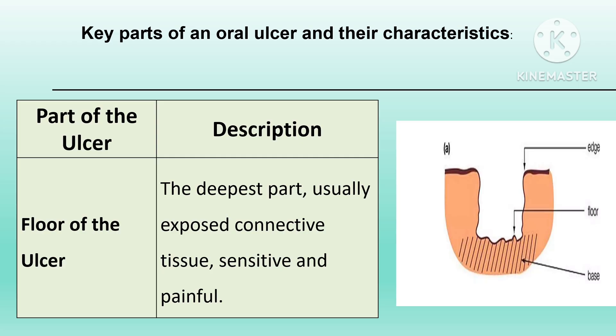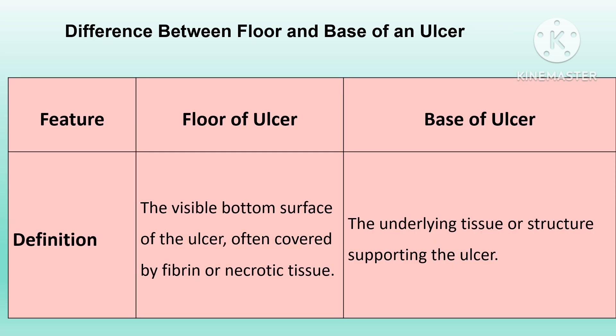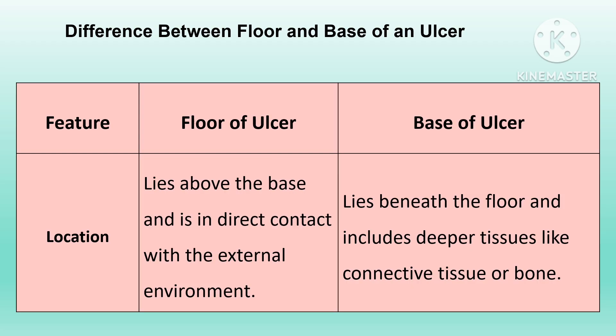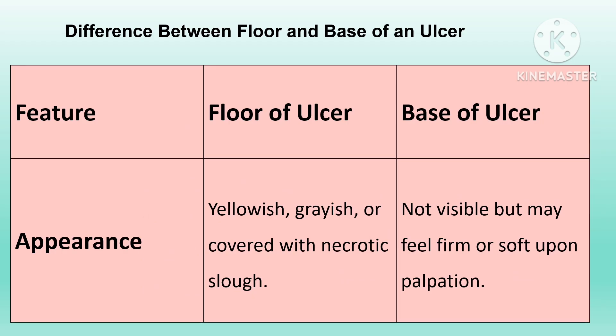The second part is the floor of the ulcer — it is the deepest part, typically exposed connective tissue, often painful and sensitive. Clinically, a smooth or granular floor can help identify the type of ulcer; for example, a granular floor might suggest an infection. The key diagnostic distinction is that the floor is the superficial part observed clinically, while the base is evaluated through palpation or imaging to assess depth and severity.